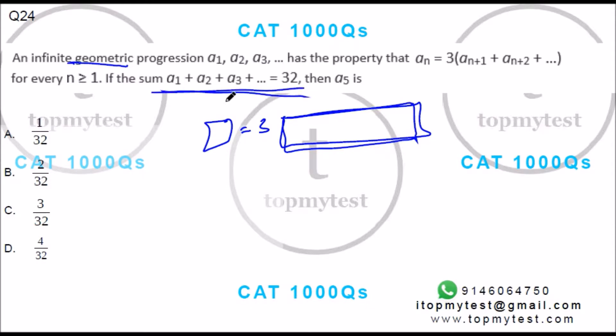It is given that the sum of the entire series is 32. Now, the first term is three times the rest of the terms, so if we split this,